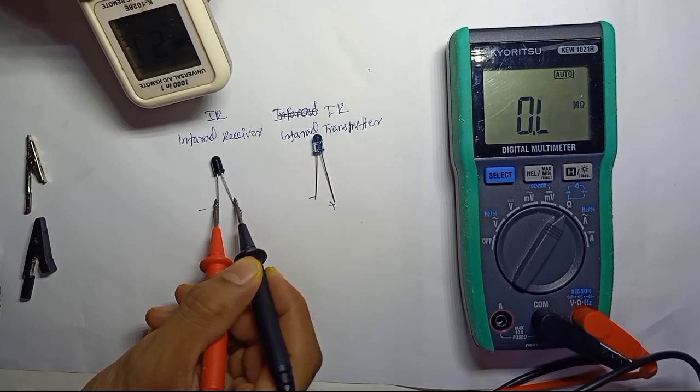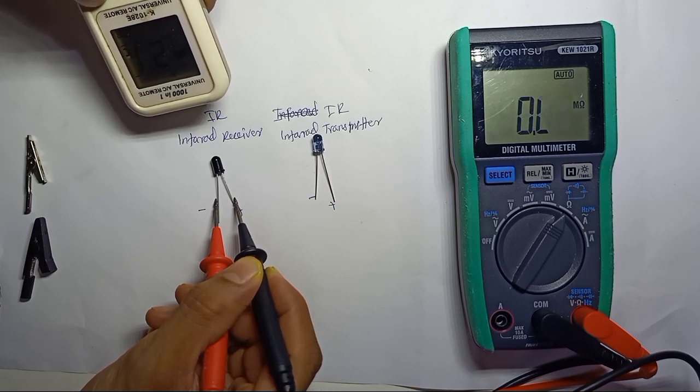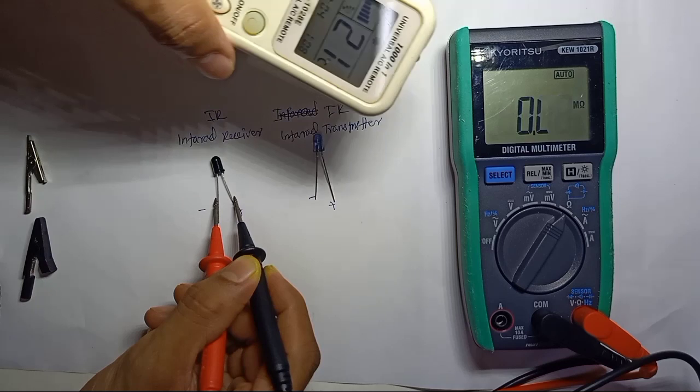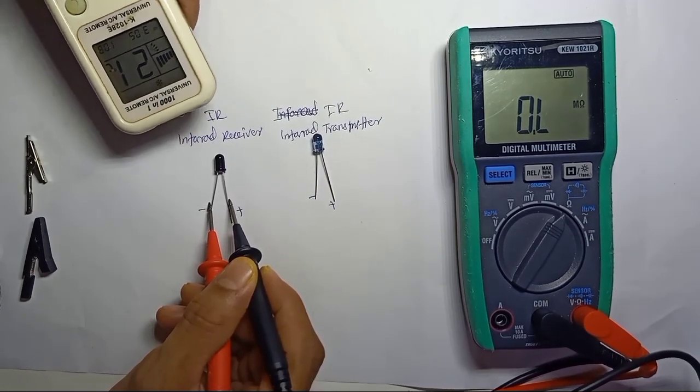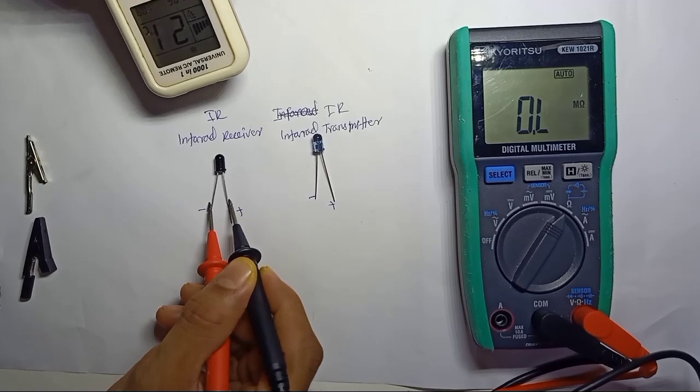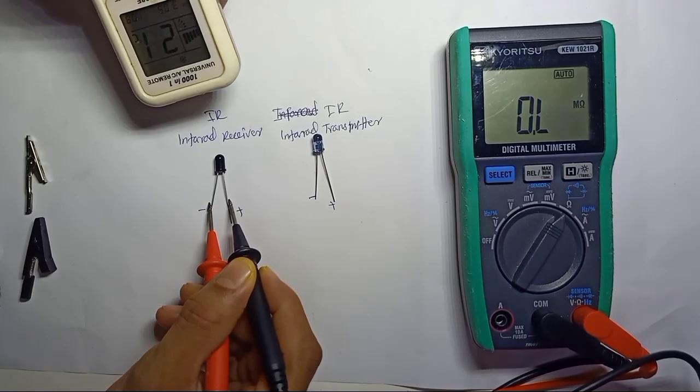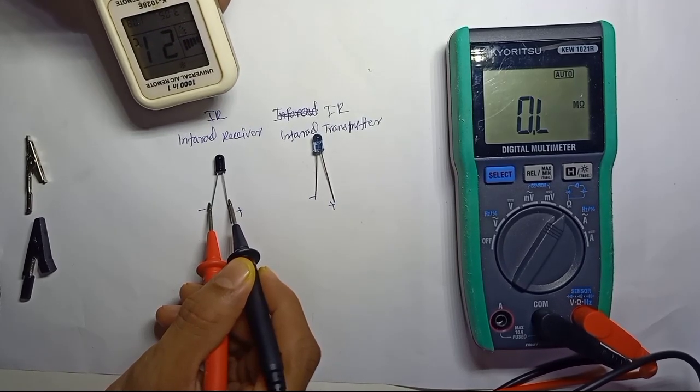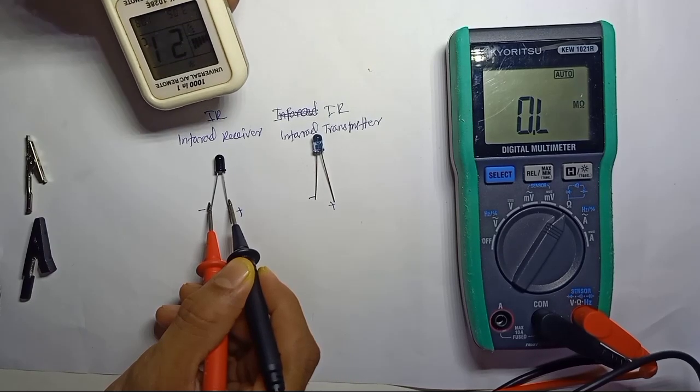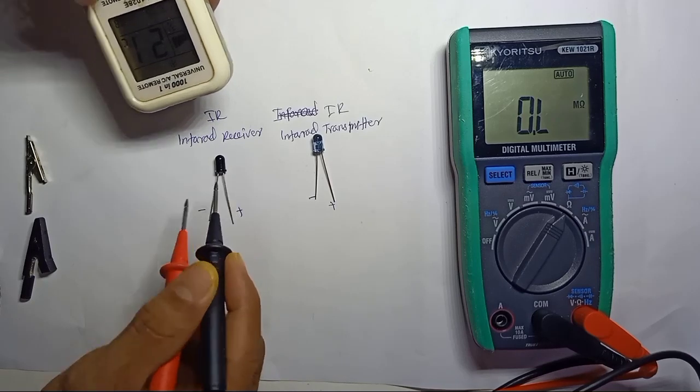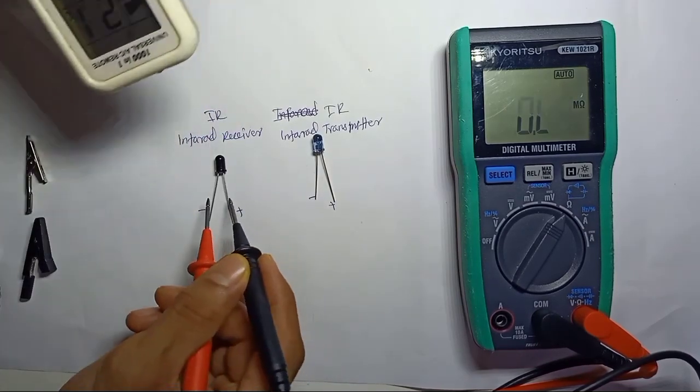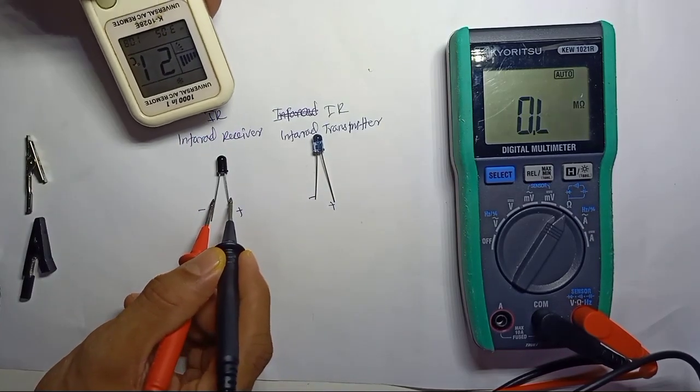Once the signal is detected here, the value will change on the multimeter. Use any remote control - TV remote control or air conditioner remote control, or any infrared remote control. Point it at the receiver and press the button.